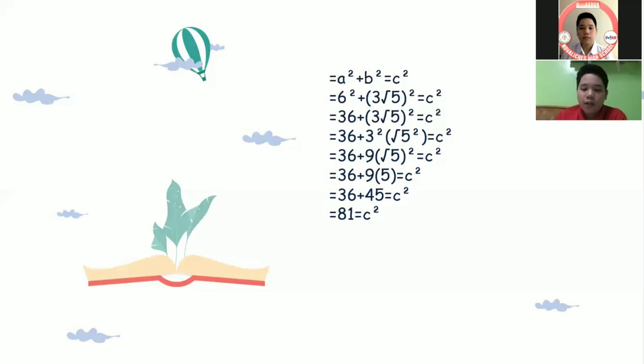Next, we need to add the terms 36 and 45 and the result is 81 equals c squared.